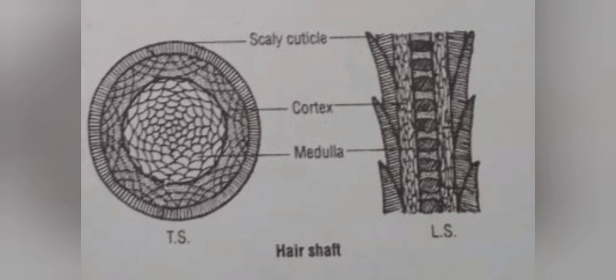Hair growth occurs by the continuous division of the cells of the stratum basale. The hair papilla supplies nutrients for the growth of the hair. The hair shaft is covered with a cuticle made up of transparent, overlapping and non-nucleated cells. Inner to the cuticle is a cortex of cornified pigmented cells. The central core is the medulla, made of shrunken cornified cells and air spaces.